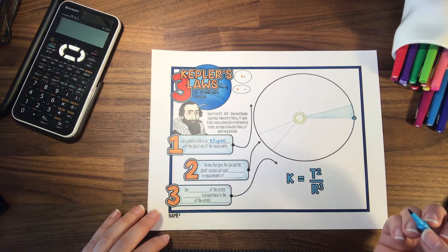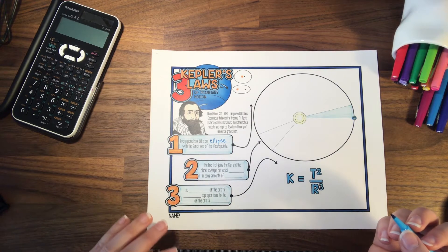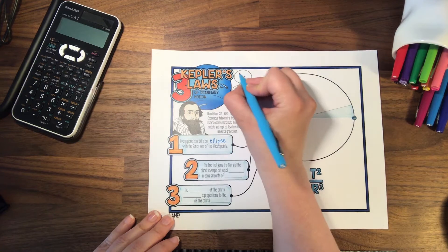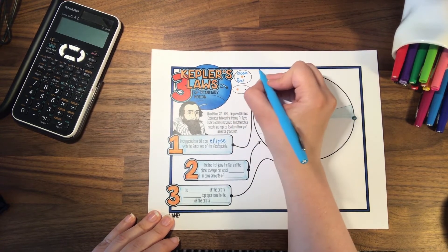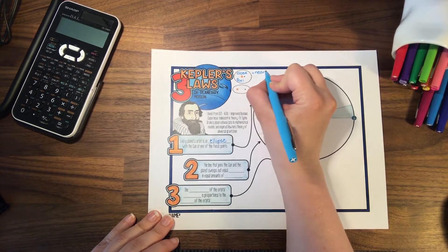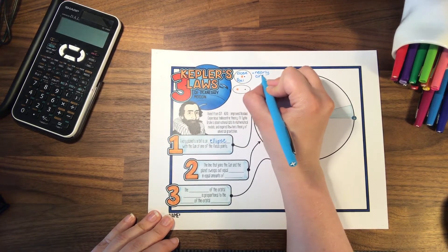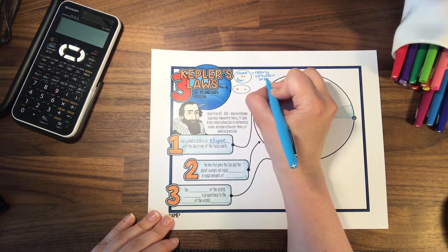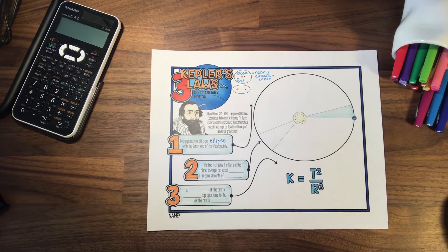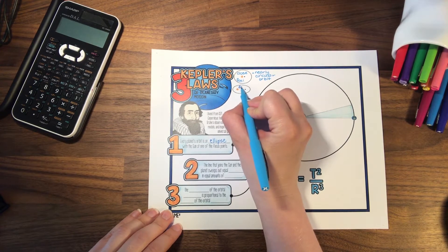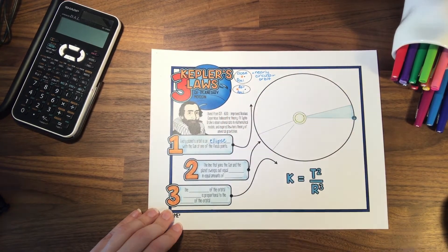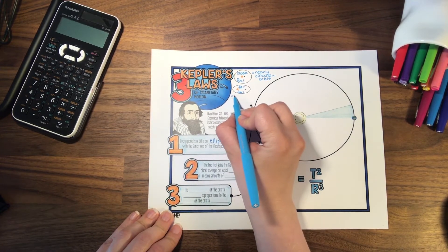If the two foci are close together, you get a nearly circular orbit — close focal points give you a nearly circular orbit. And that is the case with the planets; their foci are fairly close together relative to how far they actually orbit. If you have focal points that are far from each other, you get an elongated ellipse, which would be something like the orbits of comets.